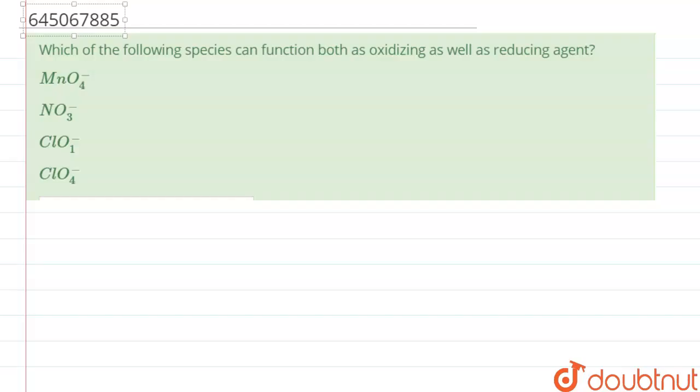Hello everyone, in this question we have been given which one of the following species can function as both oxidizing and reducing agent. So the species which can act as both oxidizing and reducing agent, it can lose and gain electrons simultaneously. It can do both the things. So let us start with the question.